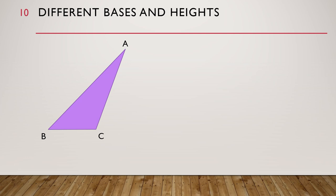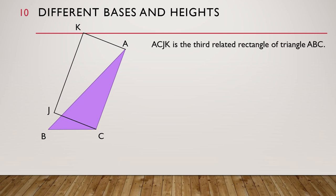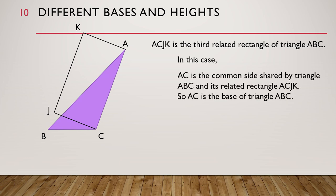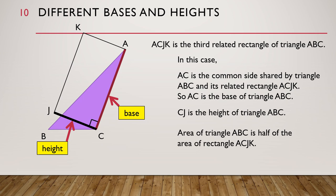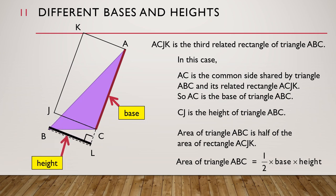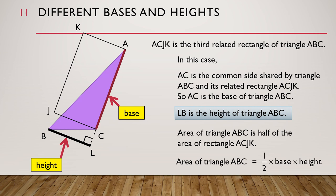Let's look at another related rectangle of triangle ABC. ACJK is the third related rectangle of triangle ABC. In this case, AC is the common side shared by triangle ABC and its related rectangle ACJK. So AC is the base of triangle ABC, and CJ would be the height of triangle ABC. The area of triangle ABC is half of the area of rectangle ACJK, and the area of triangle ABC is equal to half times base times height. Just like all the previous examples, the height may also be shown as this line LB. We can use LB to find the area of triangle ABC.